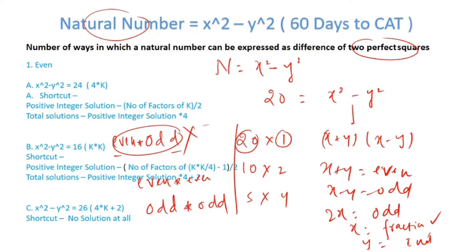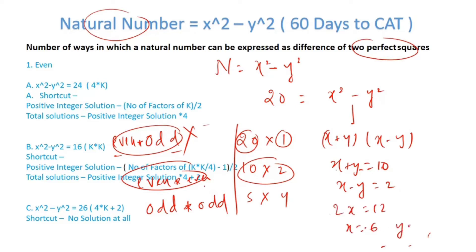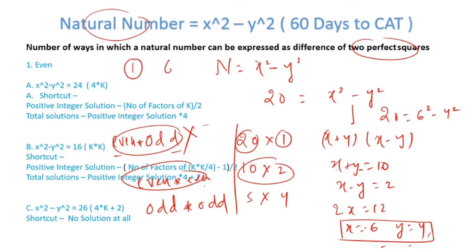In the case of even×even, you will have a solution. For example, with 10×2: x+y = 10 and x-y = 2, so 2x = 12, x = 6, and y = 4. We've got one solution here, and we can write 20 as 6² minus 4². So the number of positive integer solutions is 1, which is the pair (6, 4).